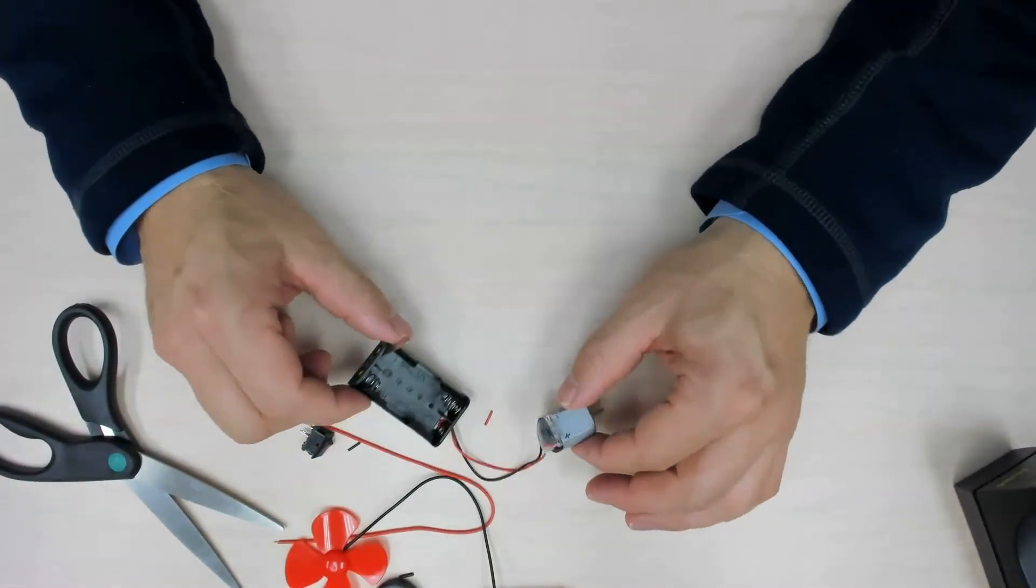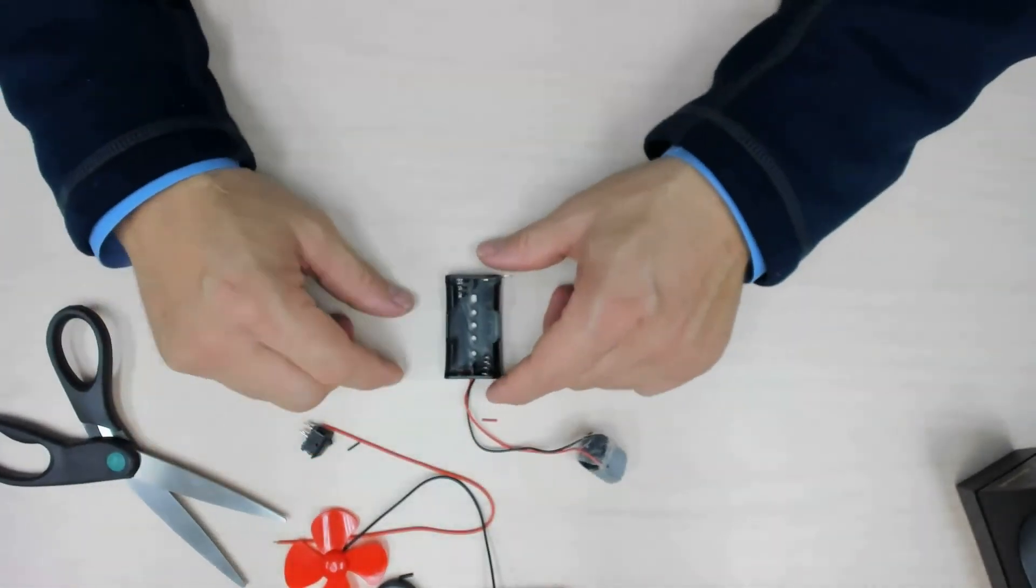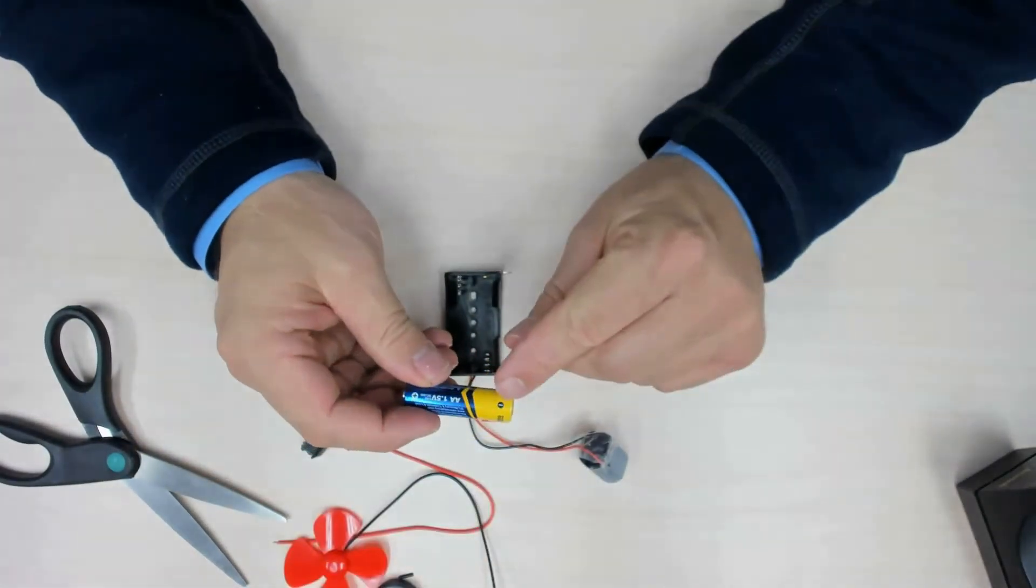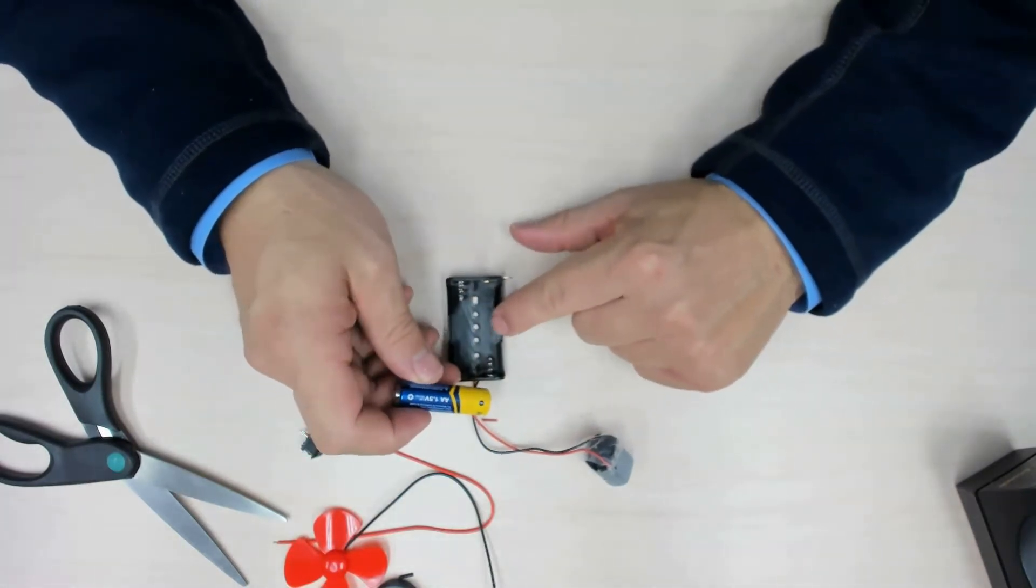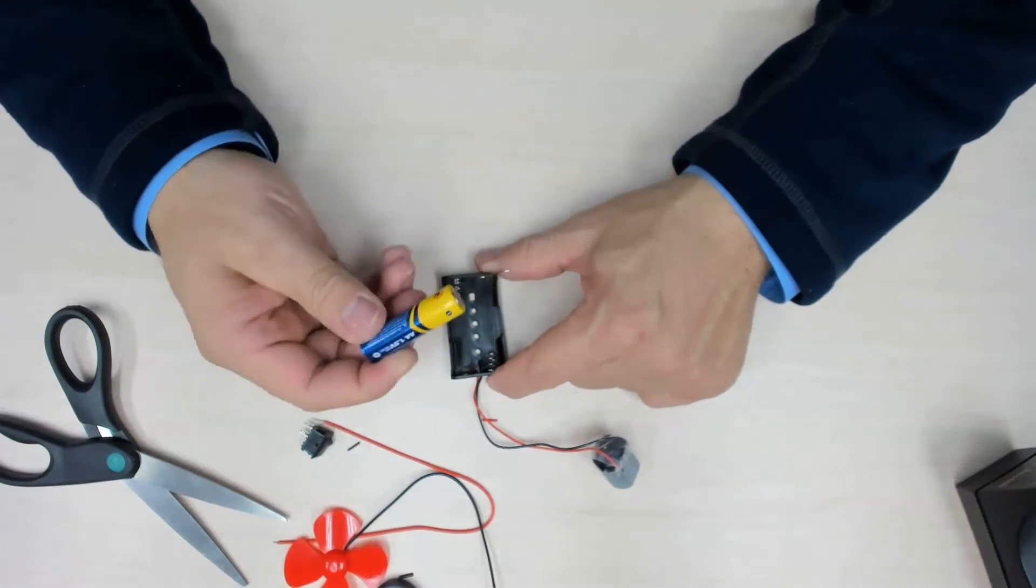Now we're ready to install our battery. Our battery has a negative and a positive. If you look inside, we have a negative and we have a positive. Again, make sure the switch is open.